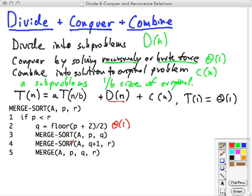Now we make two calls, so a equals 2, and each of these arrays is roughly half the size of the original array, so b equals 2 in this case. Then the merge procedure itself has to run through both sublists, so it's checking a total of n elements to merge them together, so that's theta of n.